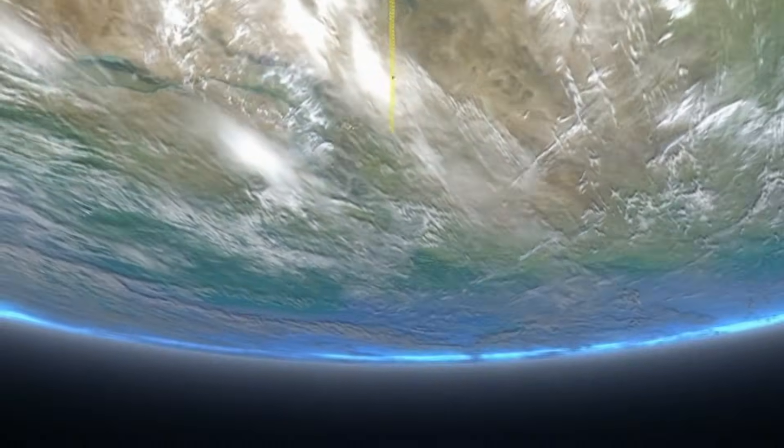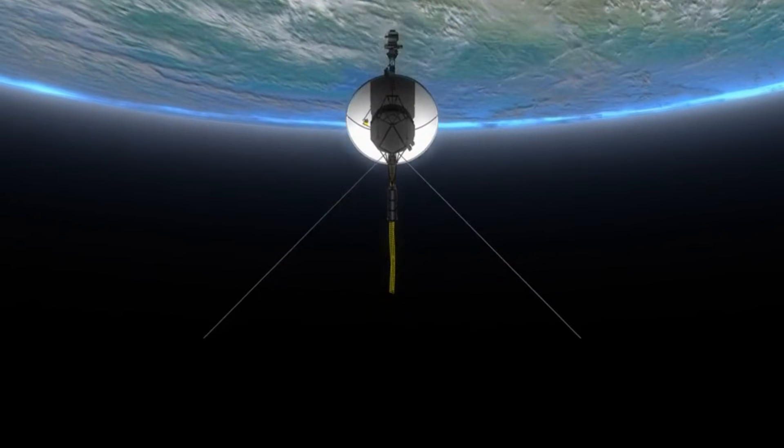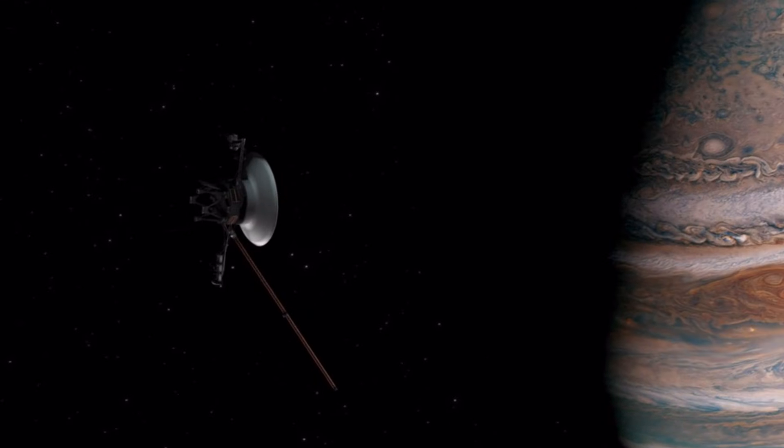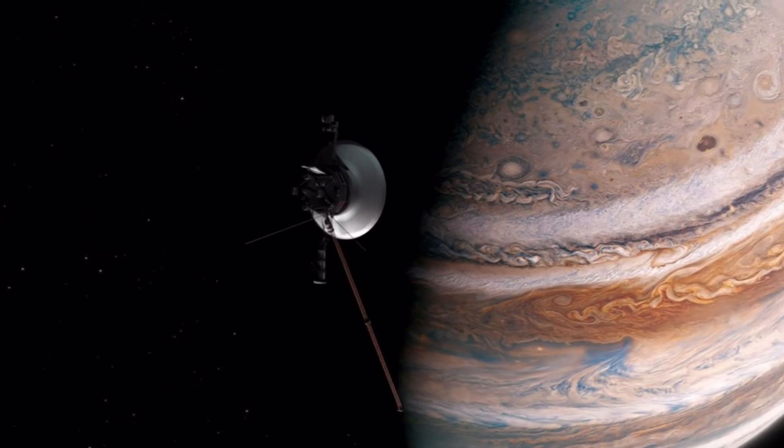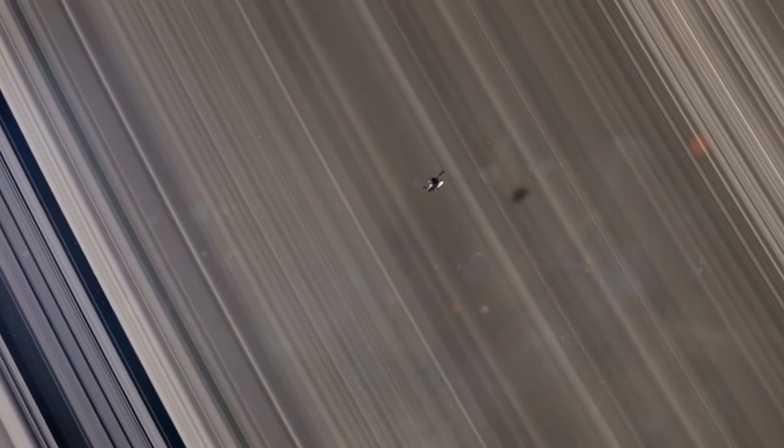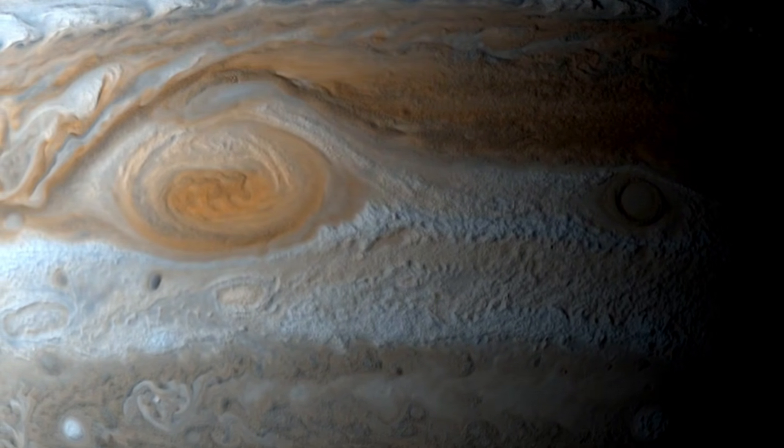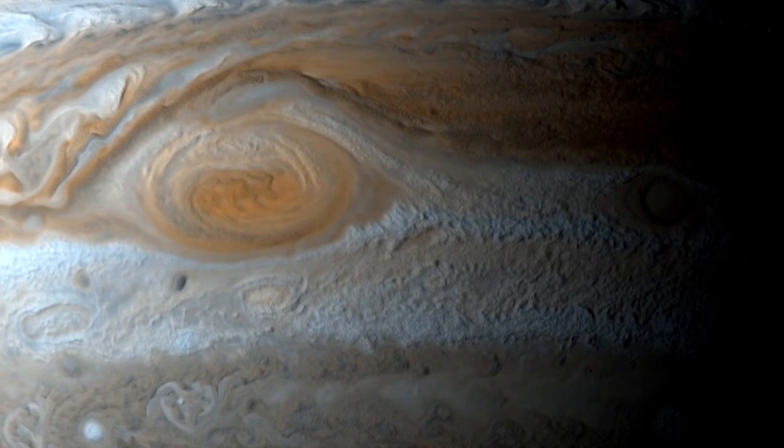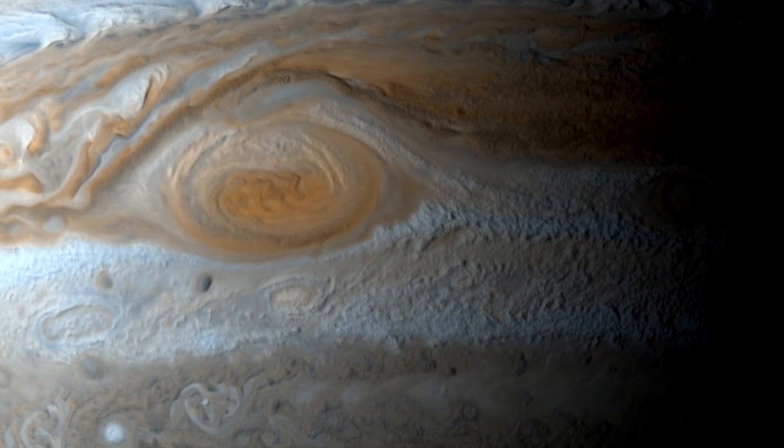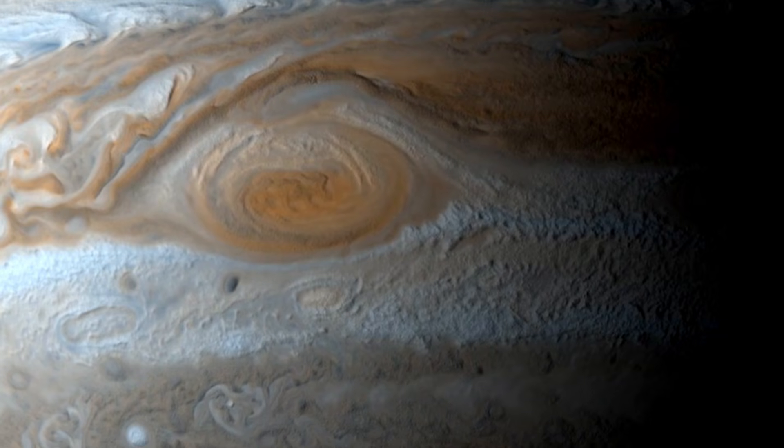Voyager 1's journey has been nothing short of extraordinary. During its flyby of Jupiter in 1979, it made several groundbreaking discoveries. It revealed that Jupiter possesses a faint ring system, a finding that surprised scientists who previously believed only Saturn had rings. Voyager 1 also provided unprecedented insights into Jupiter's Great Red Spot, a massive storm larger than Earth that has raged for centuries.